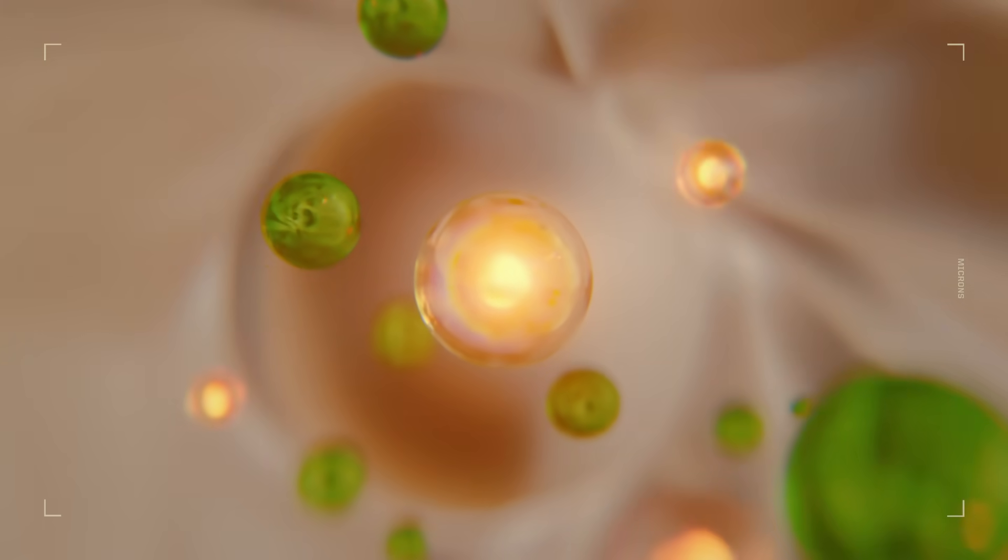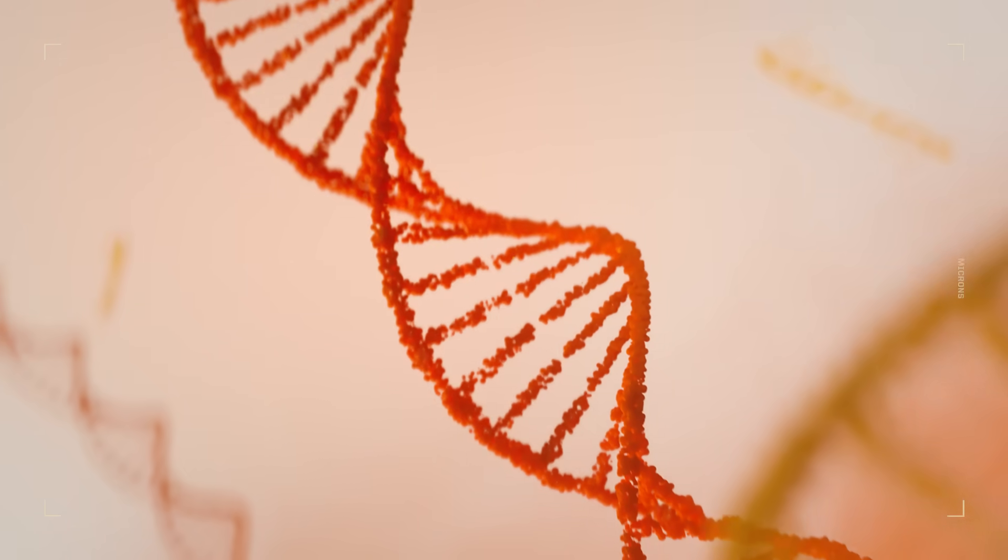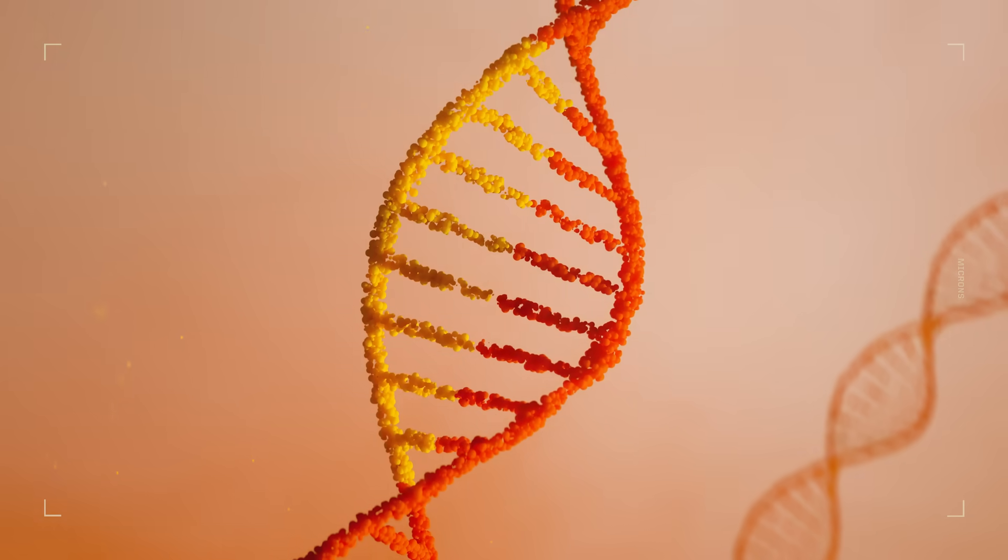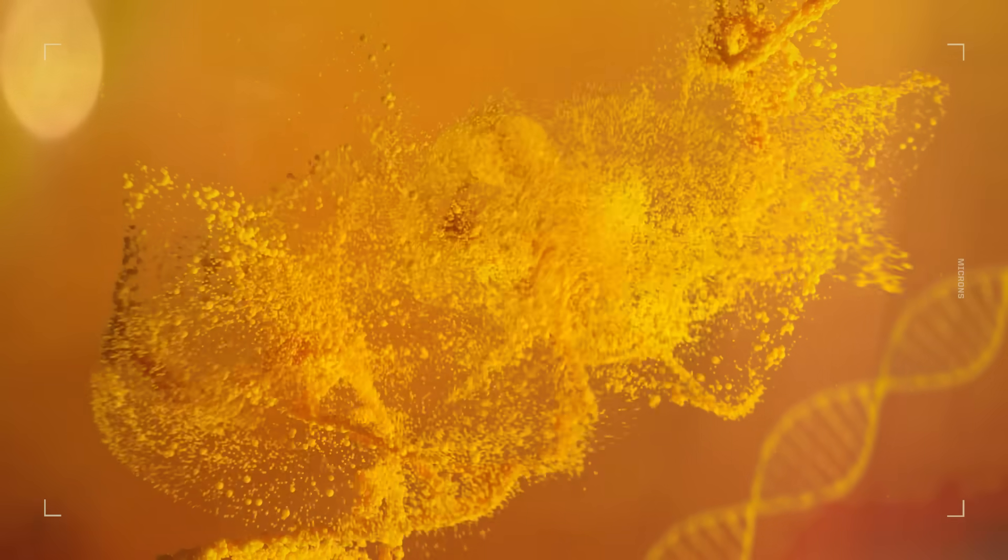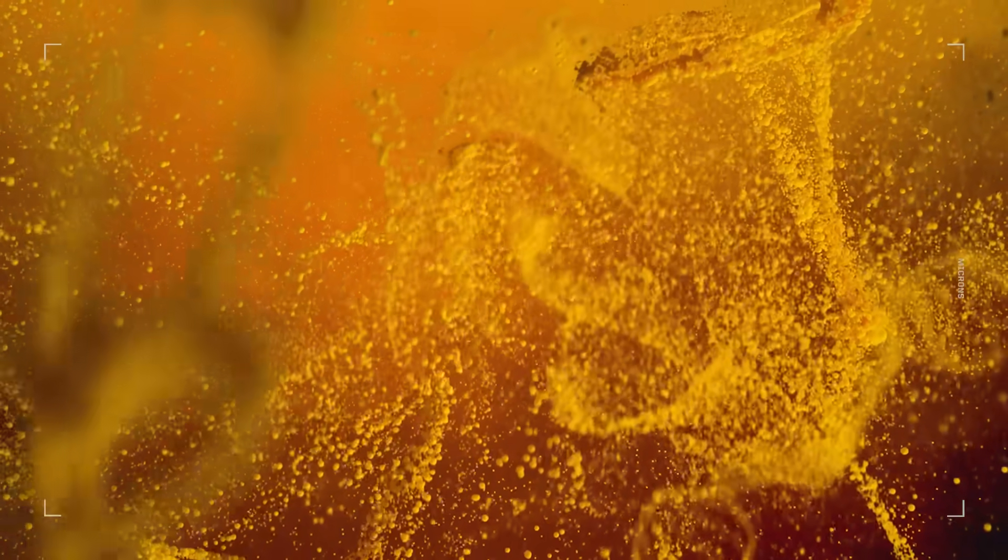Corn rootworms produce an essential protein vital to their life cycle. RNAi, true to its name, interferes with that naturally occurring process. By stopping the production of the essential protein specific to corn rootworm, it effectively causes mortality after ingestion.